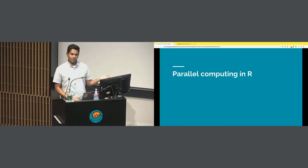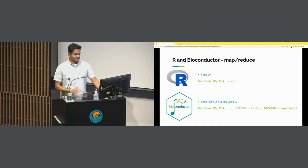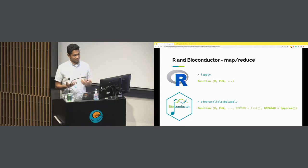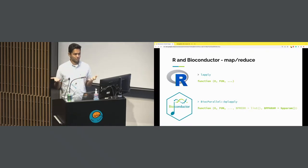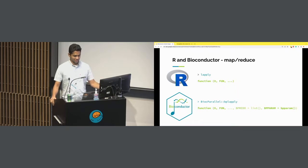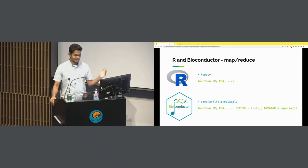So let's start with the most important thing: how to do parallel computing in R. In R and Bioconductor — let's talk about R first — lapply is a very common way to do map-reduce kind of work in R. The idea is you have a function and a list of objects, and you can apply the same function to every element in that list.